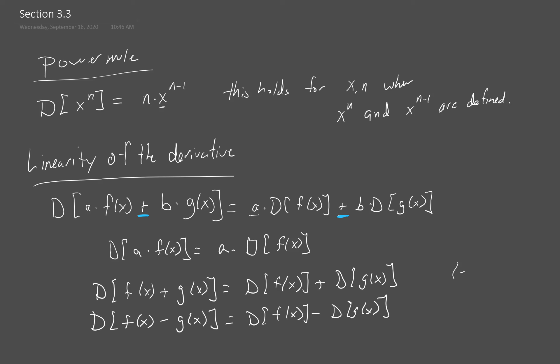The sum rule comes from a equals 1 and b equals 1. The difference rule comes from a equals 1 and b equals minus 1. And the constant multiple rule comes from a equals a and b equals 0. So there's your linearity of the derivative.